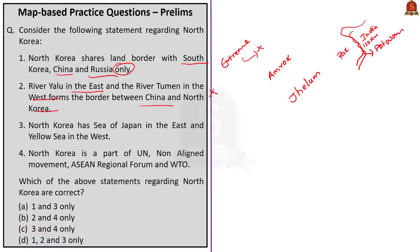Another important river that forms a political boundary between two countries is Rio Grande. Rio Grande river forms the boundary between the US and Mexico.